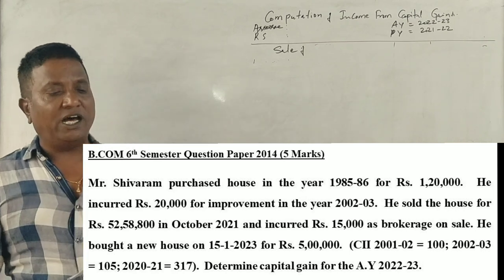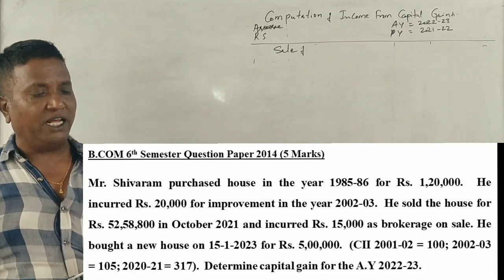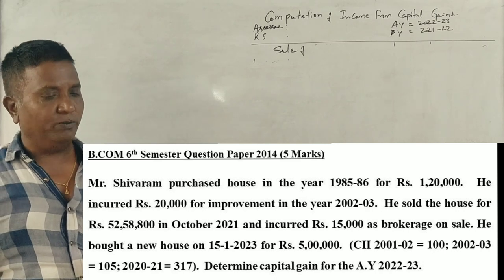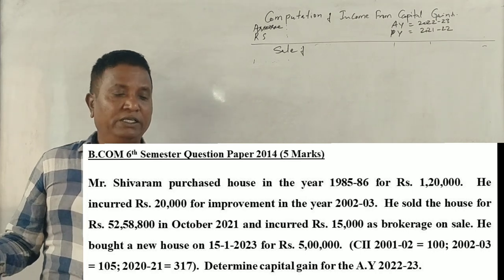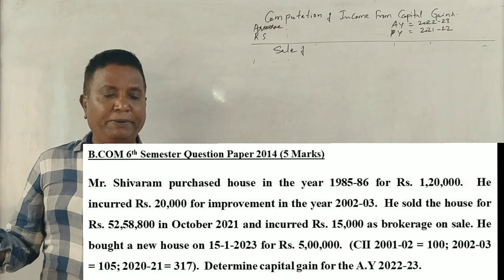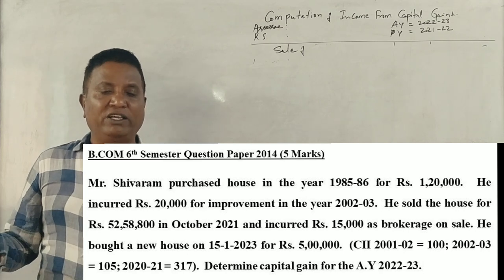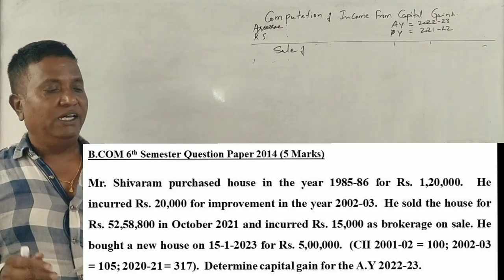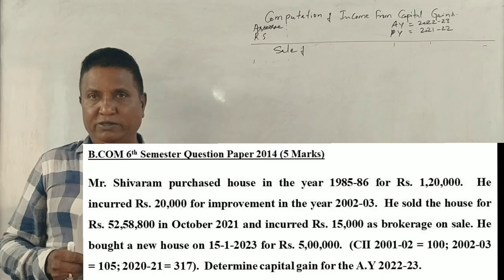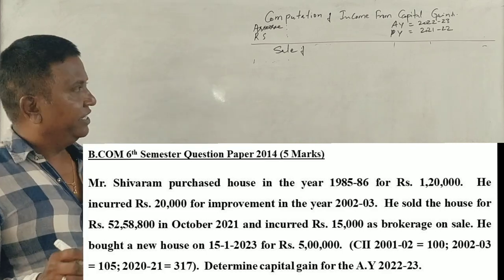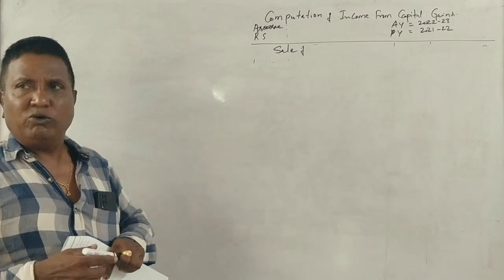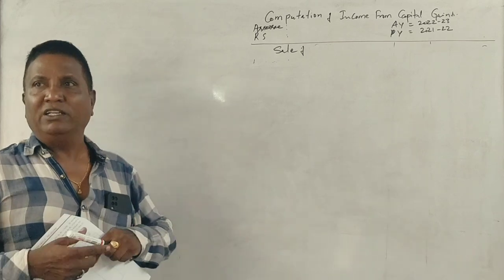He sold this house for Rs. 52,88,800 in October 2021 and incurred Rs. 15,000 as brokerage. He bought a new house property on 15th January 2023 for Rs. 5 lakh, and CII is given as follows. This is a very interesting question.